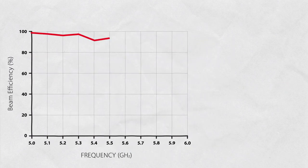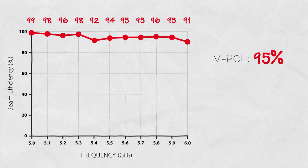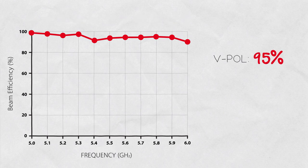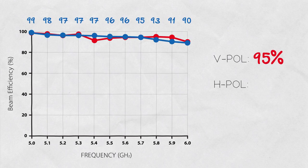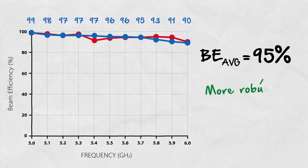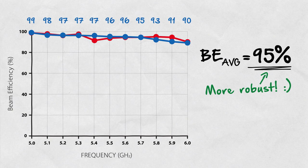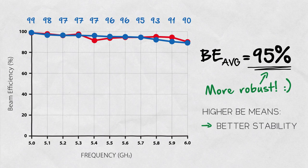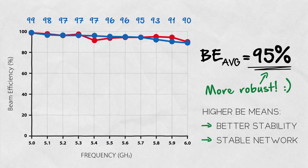But we took it to another level by averaging the beam efficiency over the whole bandwidth of operation and both polarizations of an antenna. This way, the beam efficiency as a parameter is much more robust because the higher the average beam efficiency is, the better the stability of antenna performance, resulting in a stable network regardless of the channel you use.